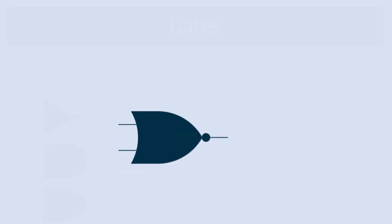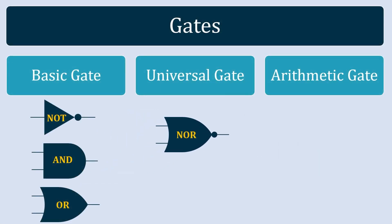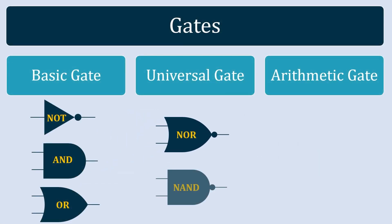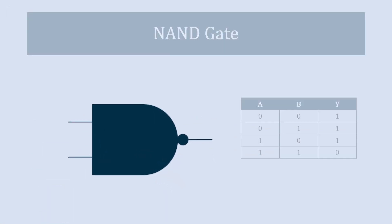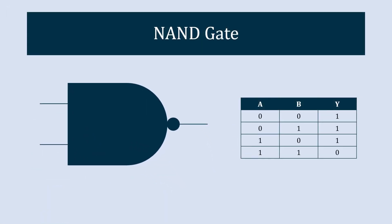The next gate in this category is the NAND gate. The symbolic representation of the NAND gate is D-shaped with inputs on the left and the output with a circle on the right.